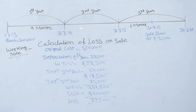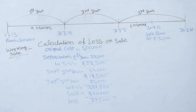In the second year, there is no adjustment, so we will charge depreciation for the entire year. In the third year, the company sold the machine on 30th September 2015 for Rs 3,50,000, so we will charge depreciation from 1st April 2015 to 30th September 2015, that is for a period of 6 months.